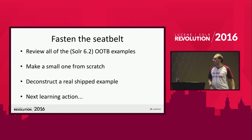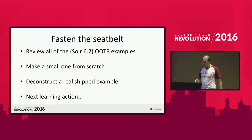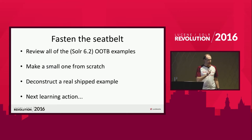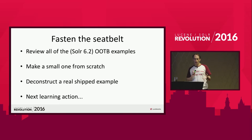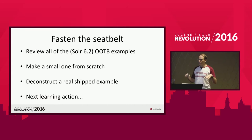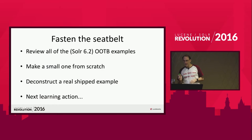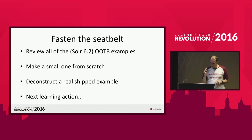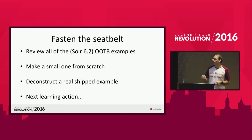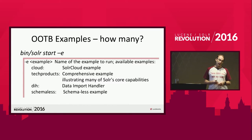Fasten the seat belts — we're going to go fast. We're going to review all of the Solr 6.2 examples that ship out of the box — more than you might think. We're going to look at a very small one, make one from scratch, so you can see what the smallest example actually looks like. Then we're going to take a real shipped example and deconstruct it. I fully expect at least some of you to get lost several times along the way, but at the end I'll give you a way forward even if you get completely lost.